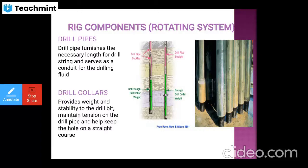Drill pipes furnish the necessary length for the drill string and serve as a conduit for drilling fluids. There are heavy-weight and light-weight drill pipes of different types. Drill collars provide weight and stability to the drill bit, maintain tension on the drill pipe, and help keep the hole on a straight course.